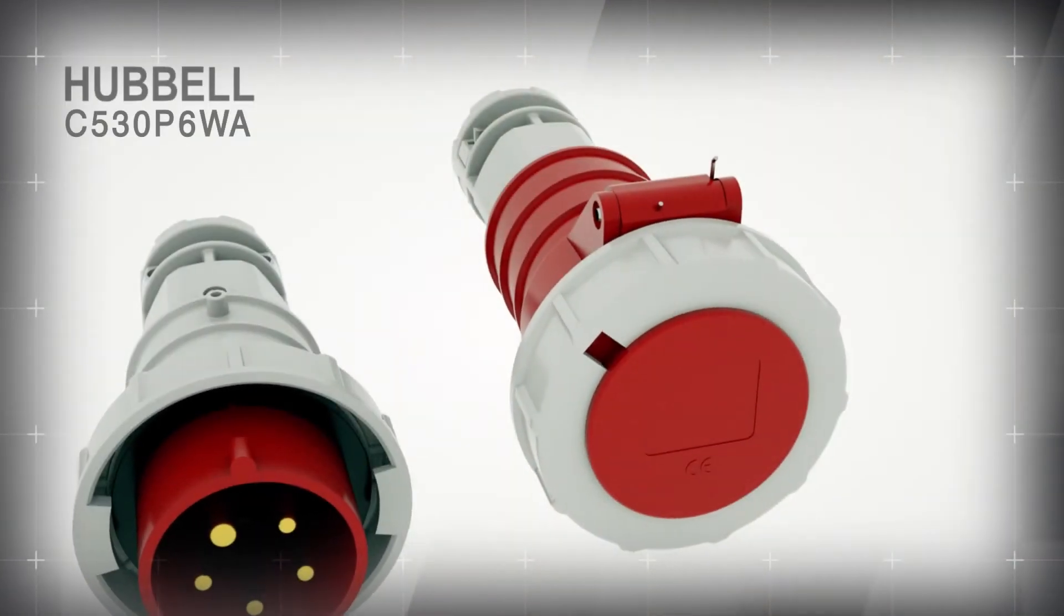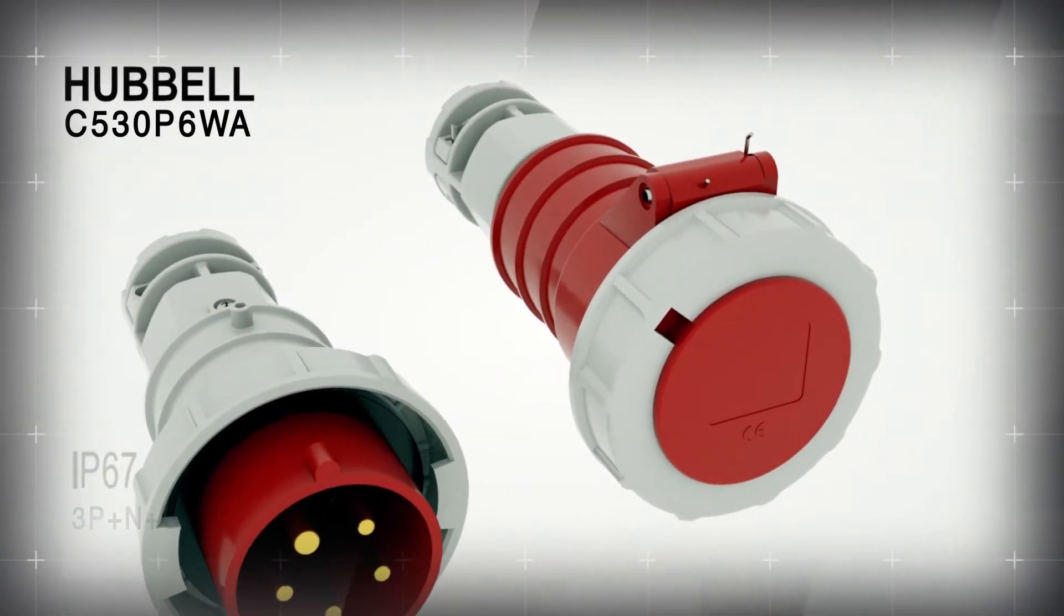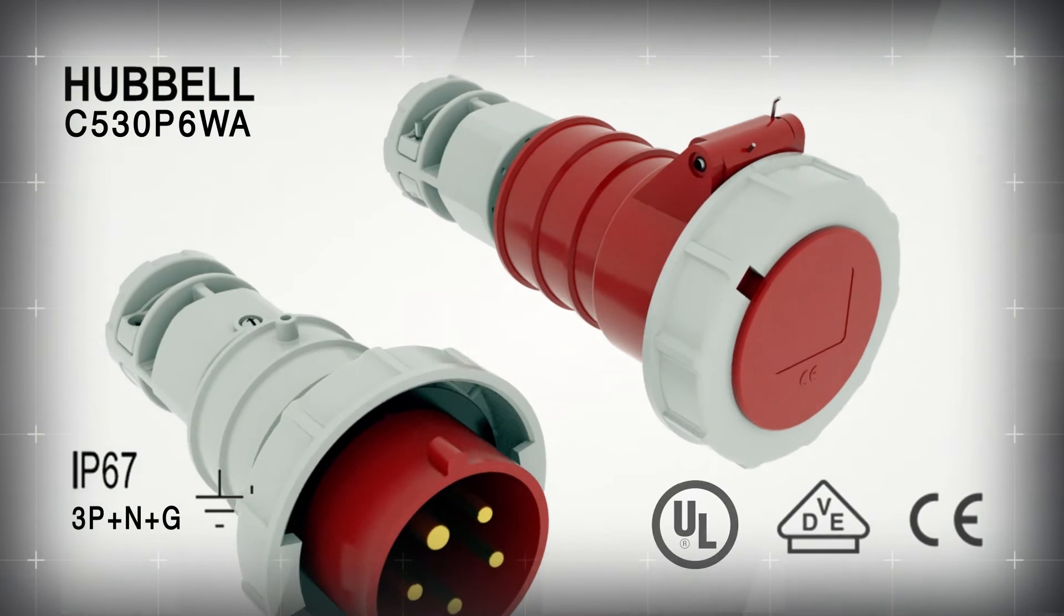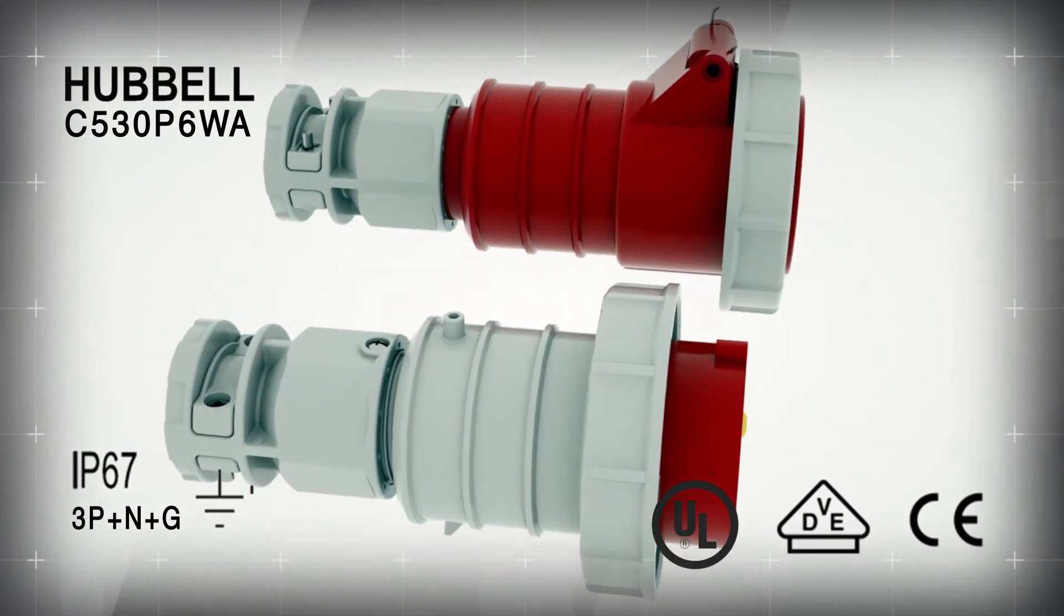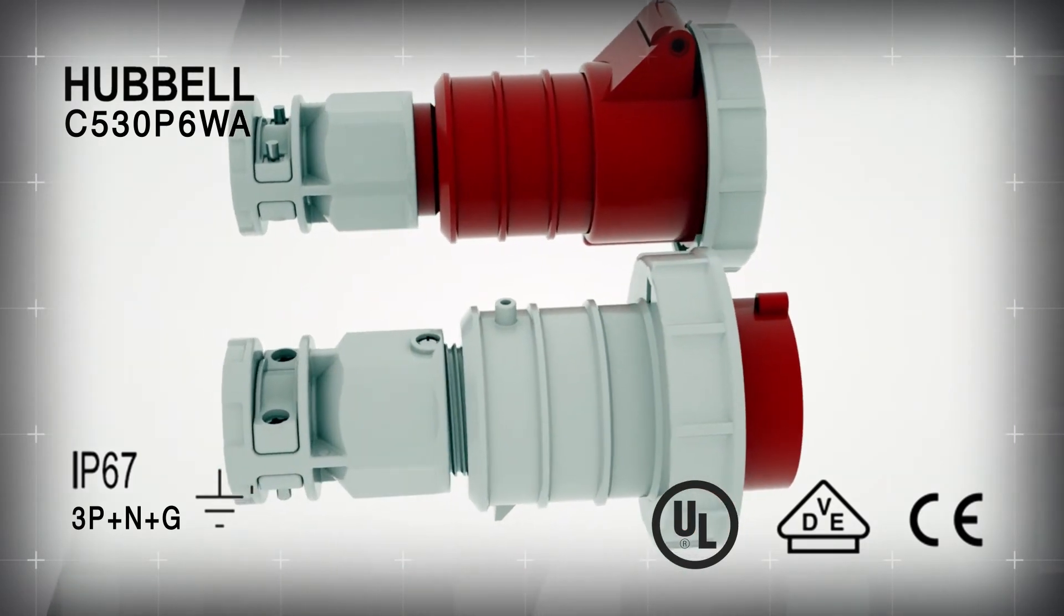Configurations with a ground pin at either 6 or 9 o'clock are available with dual UL and VDE ratings for European customers. This dual rating conveniently reduces the number of SKUs as devices are rated for both markets.